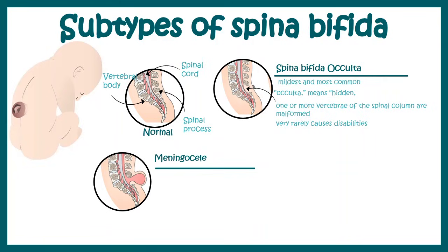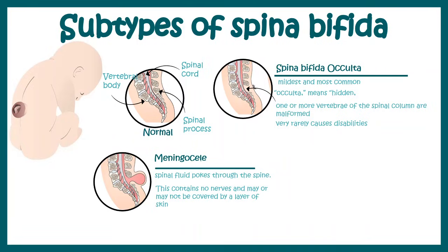The next form is meningocele. In meningocele, spinal fluid pokes through the spine and protrudes out of the back of the baby, forming a bulge. Notably, the spinal cord and spinal nerves remain intact and do not protrude. The nerves may or may not be covered by a layer of skin. In these cases, there may be minor symptoms, which are often treatable.